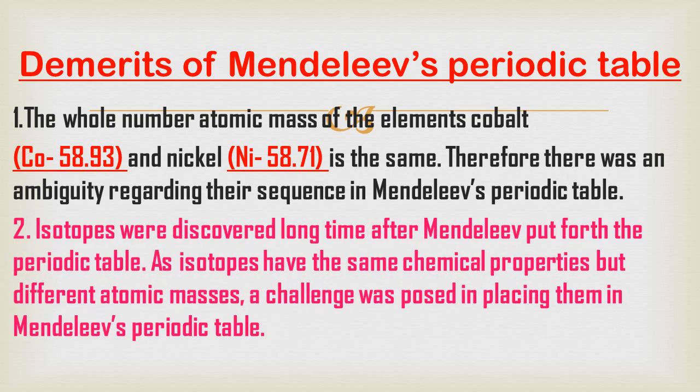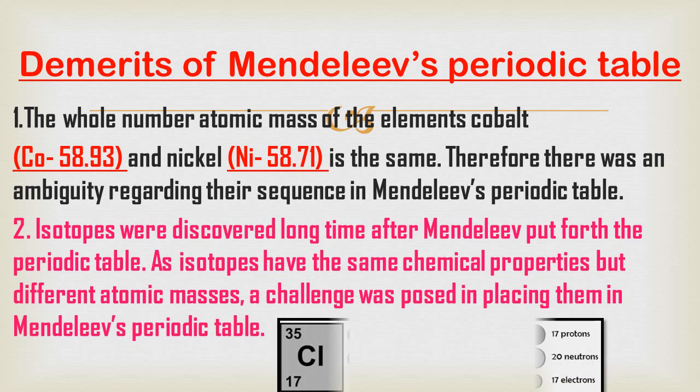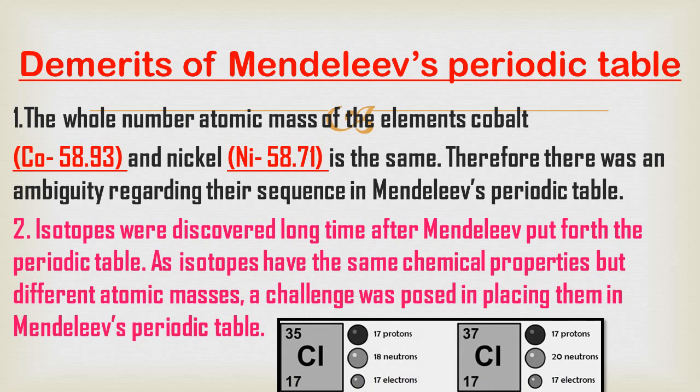The second demerit concerns isotopes, which were discovered long after Mandeliev put forth the periodic table. Since isotopes have the same chemical properties but different atomic masses, a challenge was posed in placing them in Mandeliev's periodic table. For example, chlorine has the same atomic number of 17, but atomic masses of 35 and 37. This was a big challenge in placing isotopes appropriately.